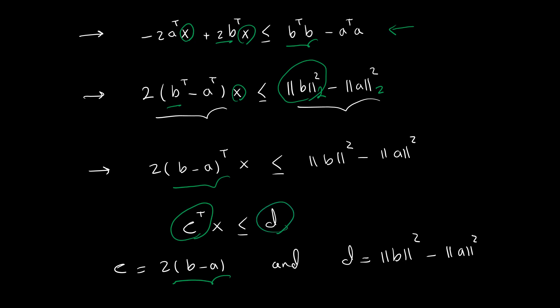Now look at what happens. We have c transpose times x where c is 2 times (b minus a), and now I have a scalar on the right hand side. This is exactly the definition of a closed halfspace because we have all the points satisfying this inequality and I have equality for this less than or equal sign. So that concludes the problem and we are done with the proof.